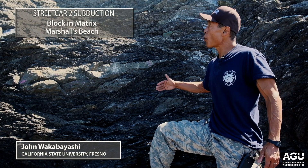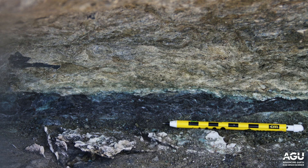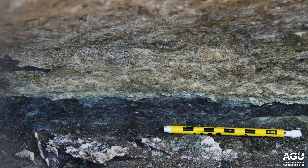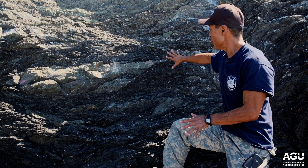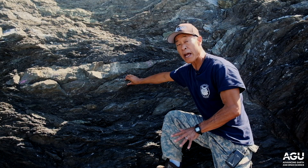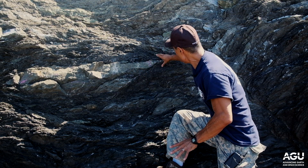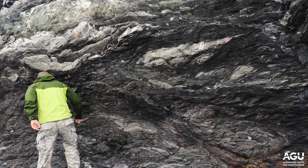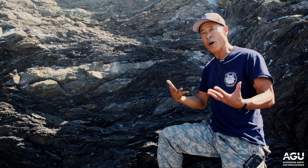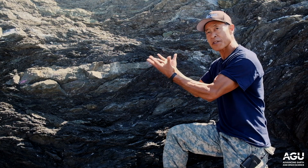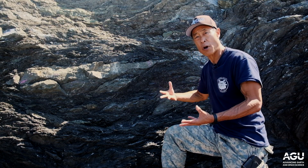We're now standing approximately two meters below the last stop — the fault that put serpentinite over sandstone and shale. What we're now looking at is a very different looking rock. We see blocks or lenses of one sort of rock, say these light gray shades, surrounded by another type of rock, which is darker gray. So we have light gray sandstone surrounded by dark gray shale. When we normally think of rocks, we think of massive rocks or we think of layered ones. But this block-and-matrix sort of structure is very different.